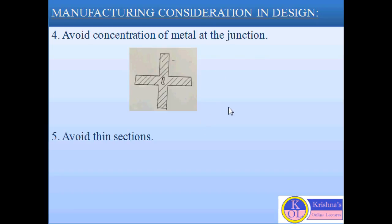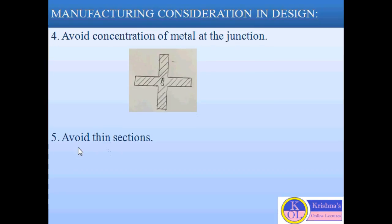Next consideration is to avoid concentration of metal at the junction. As you can see in this diagram, there is generally a concentration of metal at the junction even after the metal is solidified. Since the metal is still in a molten stage at the center, blow holes, cavities, or damages can appear at the center. So just avoid the concentration of metal by providing cord openings in the webs and ribs and staggering the ribs and webs. Next consideration is to avoid thin sections — the thickness always depends on the process of casting and should be calculated on the basis of strength consideration.